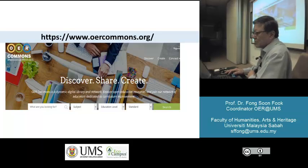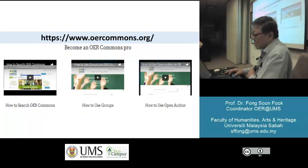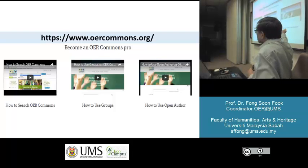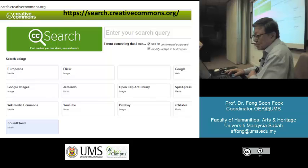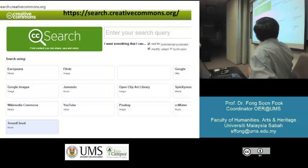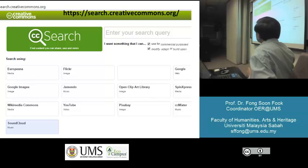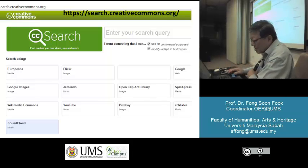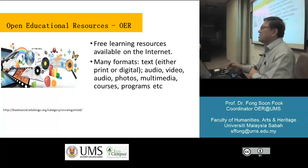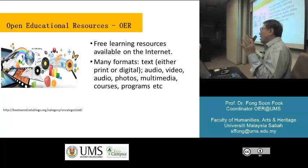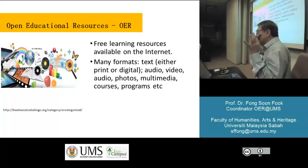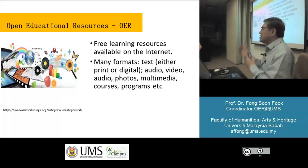Where can you get Creative Commons materials? There's an abundance of them. OER Commons is one place. There is also a Creative Commons search engine — this engine searches only for Creative Commons materials. For example, YouTube — you click it and all are Creative Commons materials. Also Flickr, and whatever else.